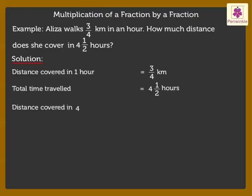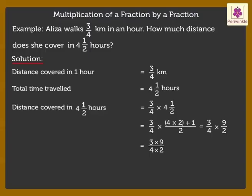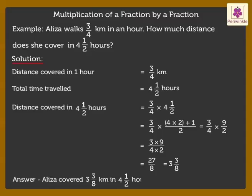Distance covered in 4 and a half hours is equal to 3 upon 4 into 4 and a half. To find the answer, we begin with the conversion of the mixed number to an improper fraction. We get 3 upon 4 into 9 upon 2. Now, find the product of numerators divided by the product of denominators which gives 27 upon 8. Finally, let us change the improper fraction to a mixed number. Thus, we get 3 and 3 upon 8. Thus, Eliza covered 3 and 3 upon 8 kilometers in 4 and a half hours.